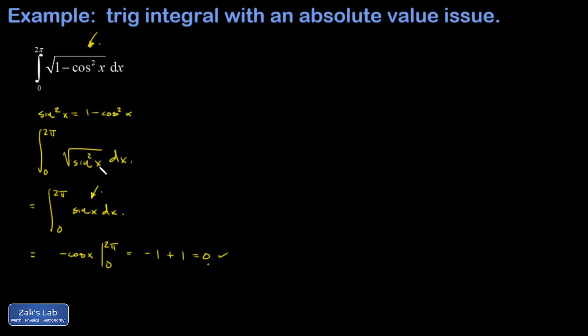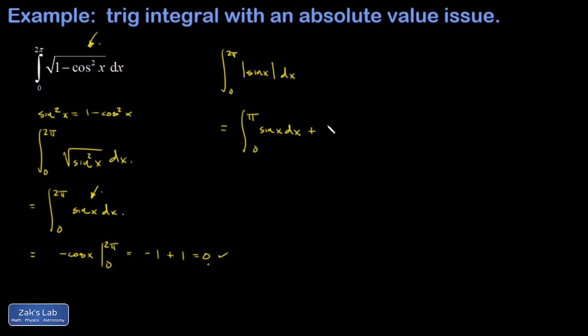What we're really looking at is the integral from 0 to 2π of |sin x| dx. The absolute value leaves the sine function alone where it's non-negative, which happens on [0, π]. Then we split the integral: on [π, 2π], where sine is negative, the absolute value multiplies it by negative one to make it positive.